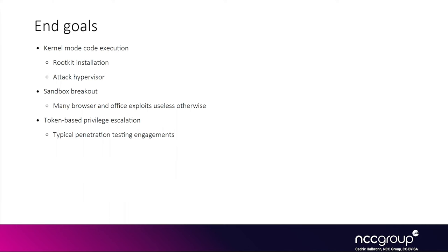A data-only attack is typically used for local privilege escalation where you modify data in kernel structures — for example, to patch some process token, typically your own process token, to a higher privilege token. So you never actually get shellcode executed in the kernel, but the result is that your process has system privileges, which are the highest privileges you can have for a userland process. Technically, system privileges is less than kernel privileges, but this is sometimes all you need to do whatever you want on that machine.